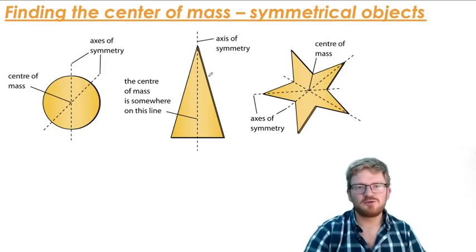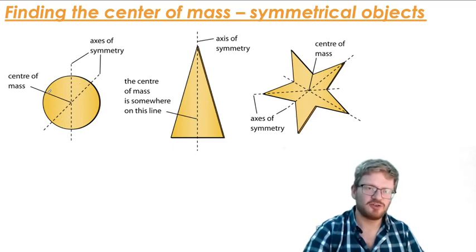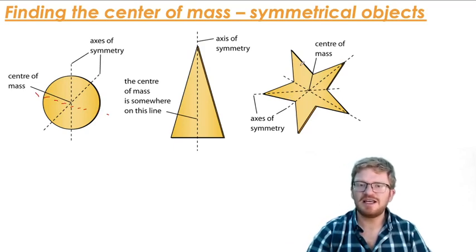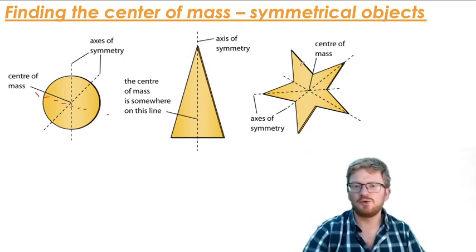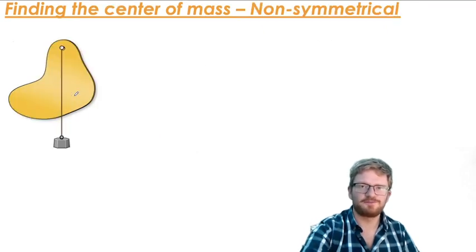So the first concept we need to get is really what is the center of mass. Here I've got some symmetrical objects, and I'm just showing you how we can find the center of mass of them. What we basically need to do is look for any axes of symmetry on that object. You can see a circle has an infinite number of lines of symmetry. This star has some nice lines of symmetry marked on here. And what we find is if the object is symmetrical, the center of mass will always lie along its lines of symmetry. So this is the point that we call the center of mass here, and this is the point that we call the center of mass here.